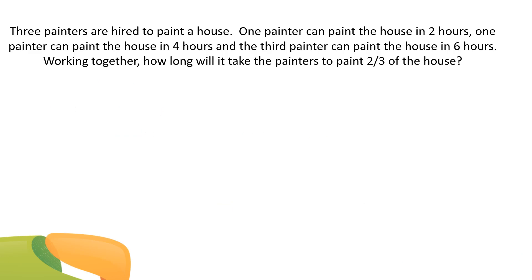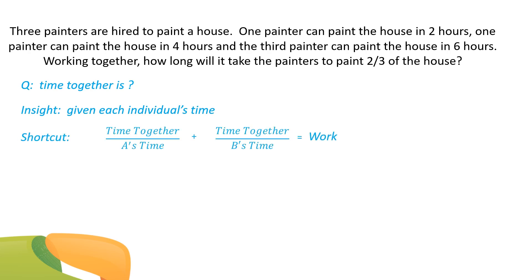Next example: Three painters are hired to paint a house. One can paint it in two hours, one in four hours, and the third in six hours. Working together, how long will it take to paint two-thirds of the house? We pull out what we're asked to find — time together — and since we've been given each individual's time, we can use our shortcut. We have three painters, so we make three fractions, add them, and set them equal to two-thirds.